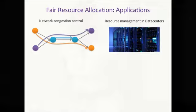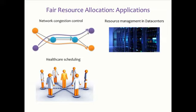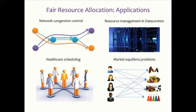This is where fairness problems have been really mostly studied. But there are many other applications where we could care about fairness. More recently, there are problems in resource management and resource allocation in data centers. You can pose almost any operations research problem as a fair resource allocation problem — healthcare scheduling, air traffic control, allocation of cadaveric organs, and market equilibrium problems.